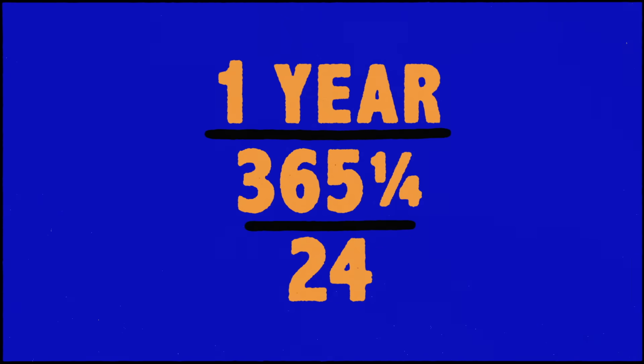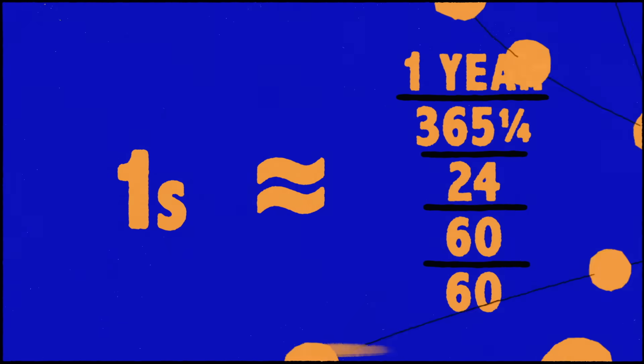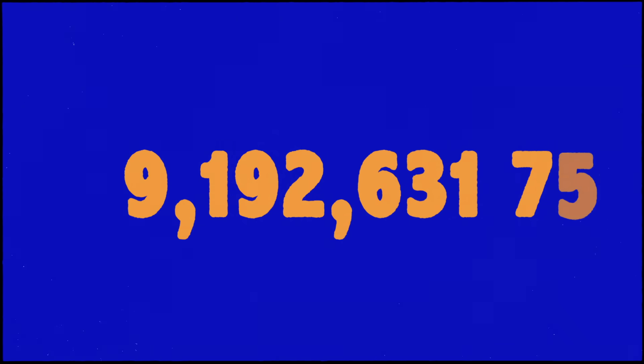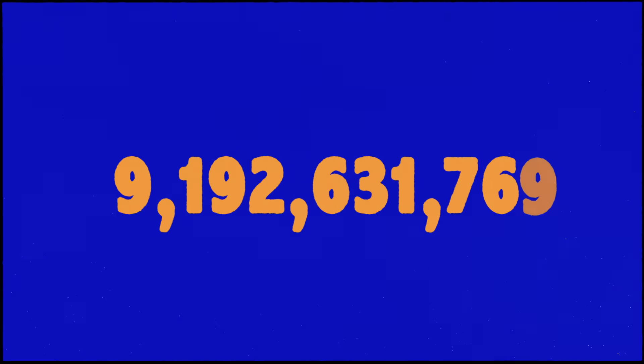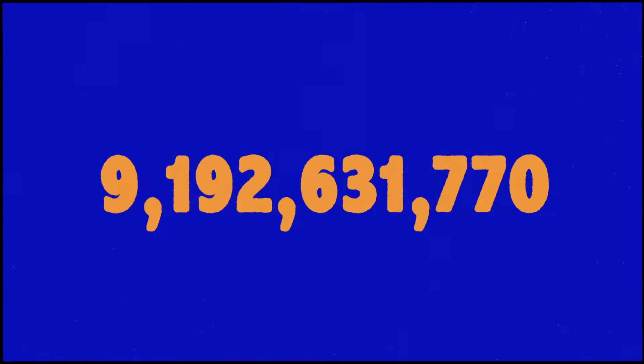The conference used the most precise astronomical measurement of a second available at the time, beginning with the number of days in a year and dividing down. When compared to the atom's ticking rate, the results formally defined one second as exactly 9,192,631,770 ticks of a cesium-133 atom.